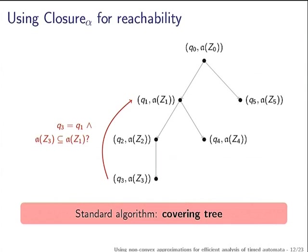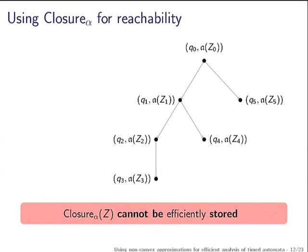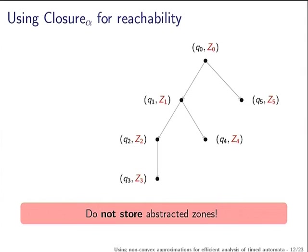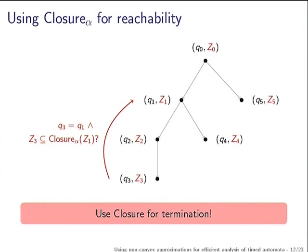Direct zone inclusion has a quadratic algorithm over the number of clocks. But why not use closure for this inclusion check? Because closure is not convex, you cannot store it as efficiently as zones. So instead: do not store your abstracted zones, but use your closure for termination. Instead of checking normal inclusion, check if your zone is included in the closure of some other already-visited zone.